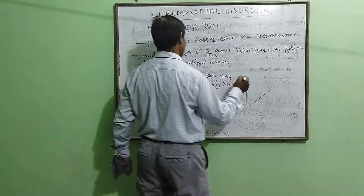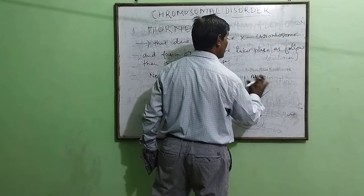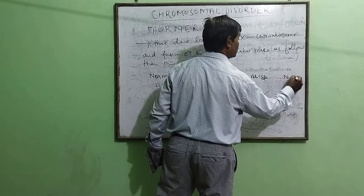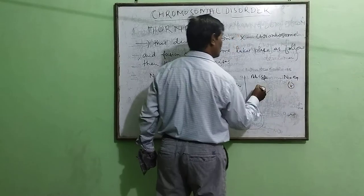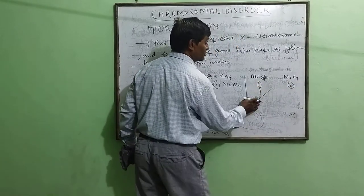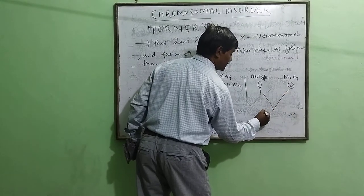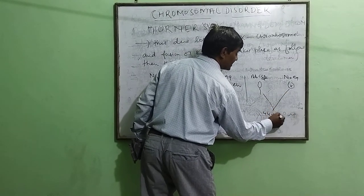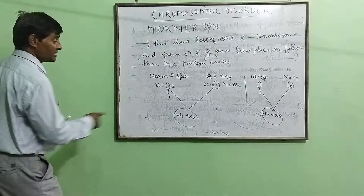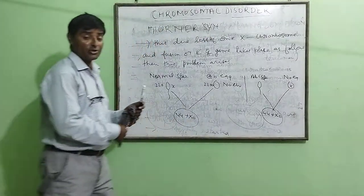In another situation, an abnormal sperm fuses with a normal egg. The egg contains an X chromosome, but the sperm has no sex chromosome. Again the same XO condition arises. So this is the genotype of the person suffering from Turner Syndrome.